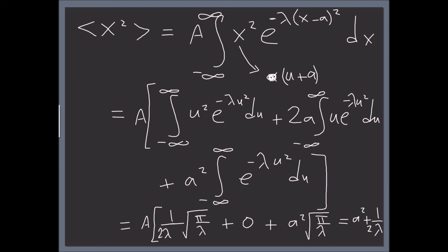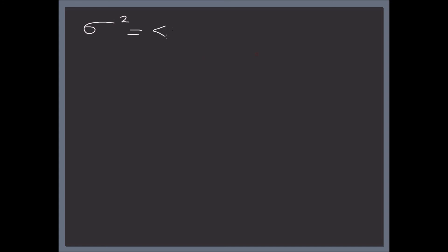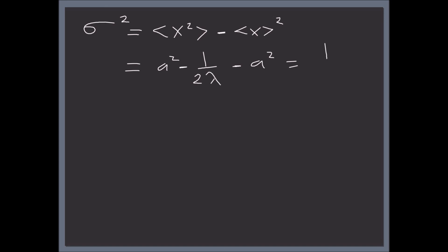The standard deviation sigma: sigma squared equals the expectation value of x squared minus the square of the expectation value of x. Plugging in, we have (a squared plus one over two lambda) minus a squared, which equals one over two lambda. So sigma, the standard deviation, equals one divided by the square root of two lambda, where lambda can be any constant.